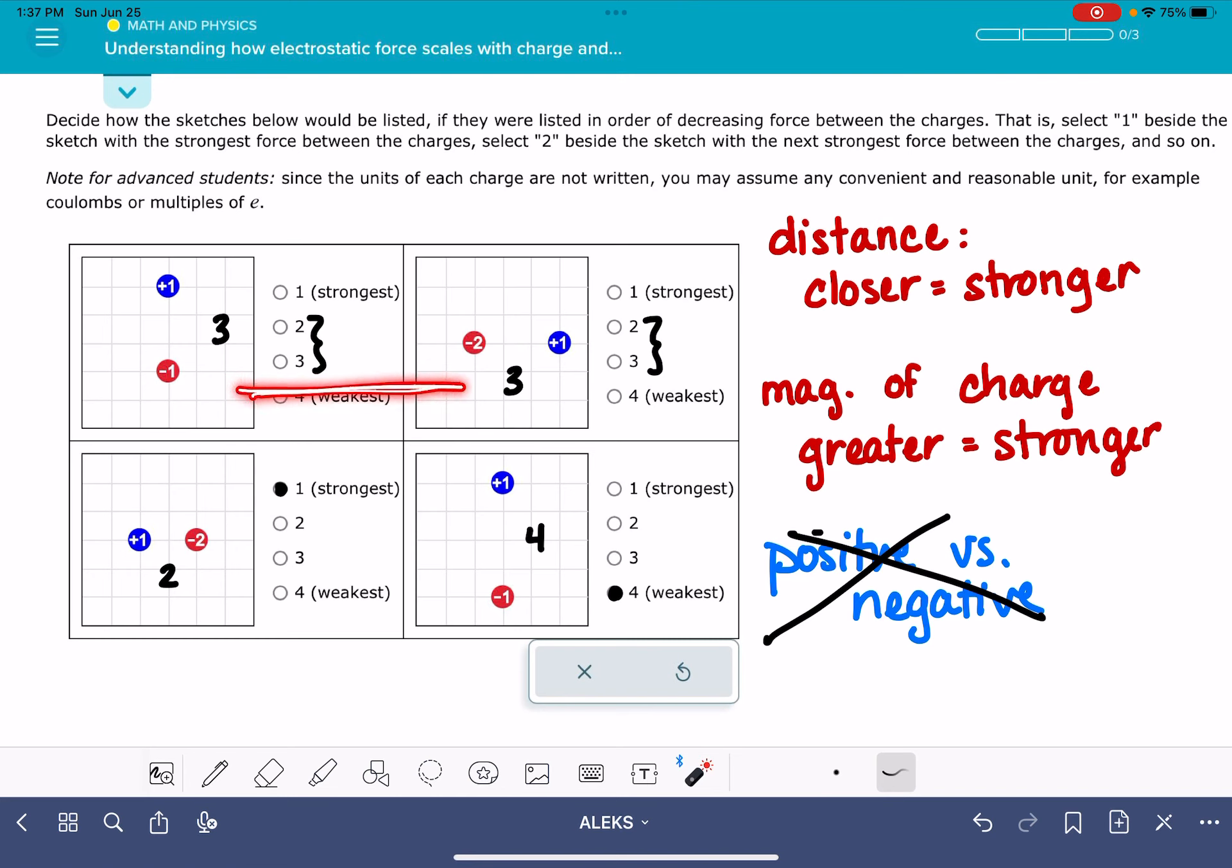And to help us figure out which of these is stronger, we're going to take a look at the magnitude of charge. This one, both point charges have a magnitude of one. This one has a magnitude of two. The greater the charge is, the stronger the force is. So that one is going to be our second strongest and this is our third strongest.